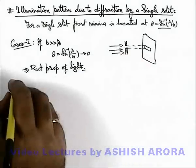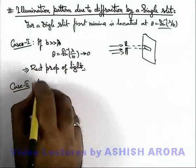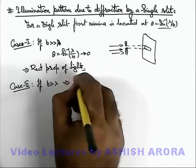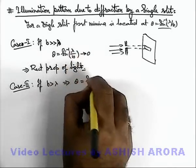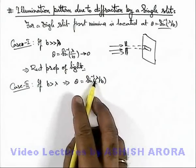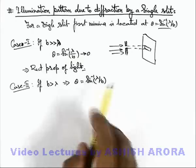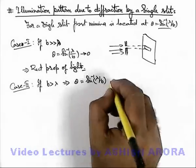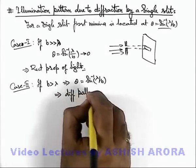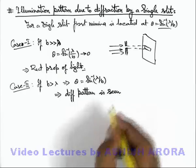Now if we consider the situation of Case 2, where we say if slit width is not very large but it is greater than lambda, this implies the value of theta we are getting is sine inverse of lambda by b. And if b is more than lambda or if it is of the order of lambda, the diffraction pattern will be seen. So in this situation, diffraction pattern is seen which we have observed as well as analyzed in the previous sections.